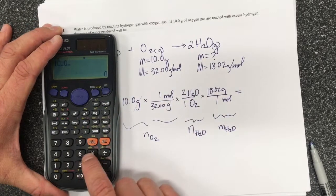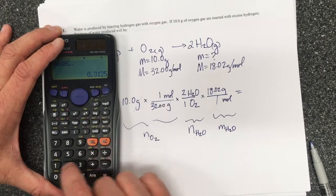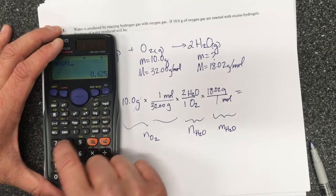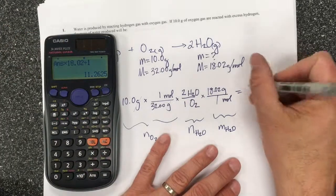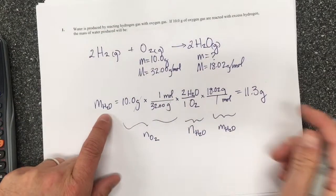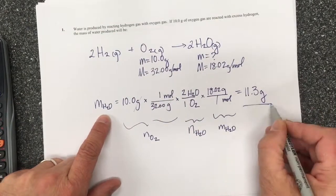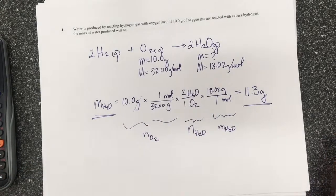When I put this into my calculator I'm going to get 10.0 times 1 divided by 32 times 2 divided by 1 and then times 18.02 divided by 1, and I get 11.3 grams of water. So this number here is this value.